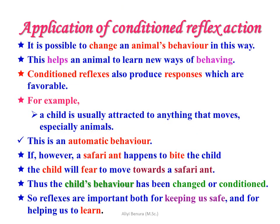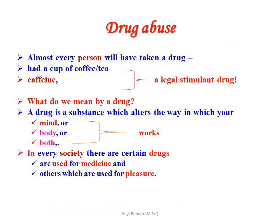The application of conditioned reflex actions: it is possible to change an animal's behavior in this way, helping an animal to learn new ways of behaving. Conditioned reflexes can also produce responses which are favorable. For example, a child is usually attracted to moving things, especially animals — this is an automatic behavior. However, if an animal bites a child, the child will fear moving toward it, so the child's behavior has been conditioned. Thus, reflexes are important both for keeping us safe and for helping us to learn. In the next part, we will cover drug abuse.